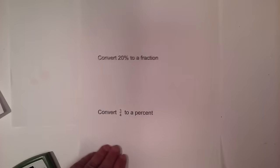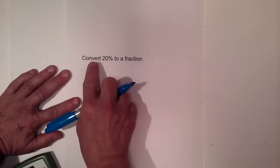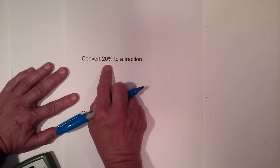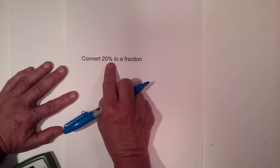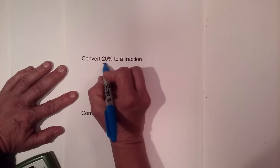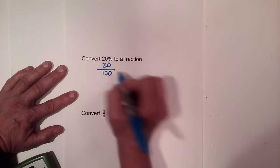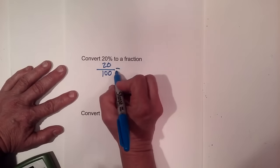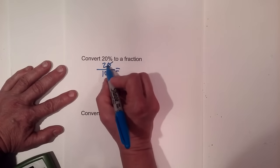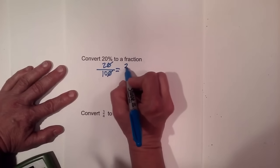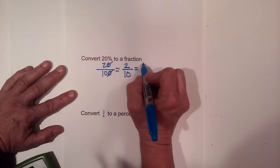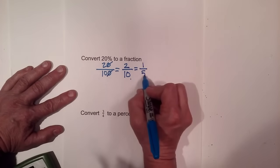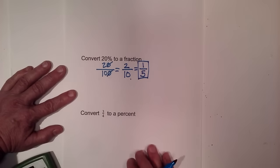Let's convert twenty percent to a fraction. Per cent means per one hundred — there are a hundred cents in a dollar. So put twenty over one hundred and reduce. They both end in zero, so divide by ten, giving two over ten. Two goes into itself once and two goes into ten five times, so that reduces to one-fifth.